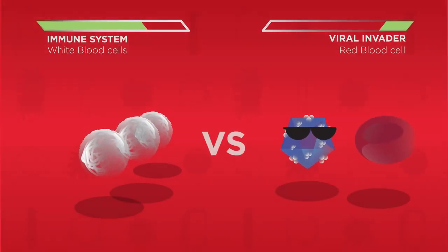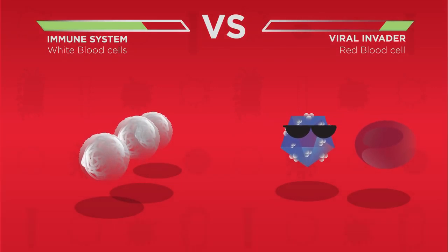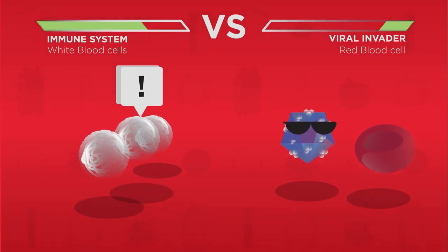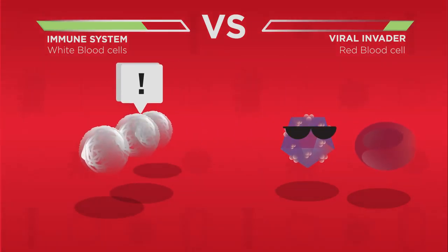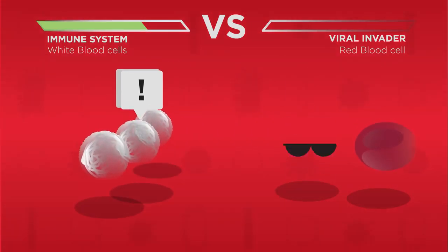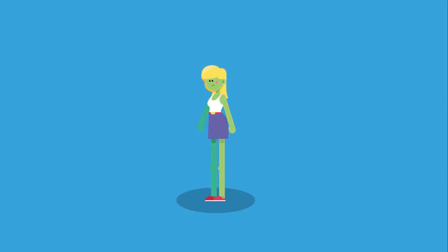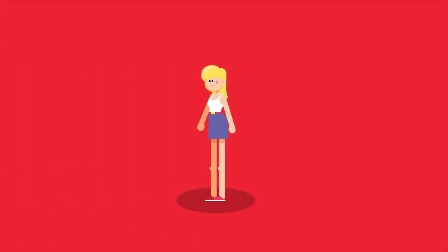Fortunately, the human immune system is very good at dealing with viral invaders. Sometimes our immune system will recognize the virus as an intruder and will destroy the virus before it gains entry into the cell. Even after infection begins, our immune system destroys the virus and the person recovers. Sometimes the immune system cannot destroy the virus fast enough and the virus can cause permanent damage or death.